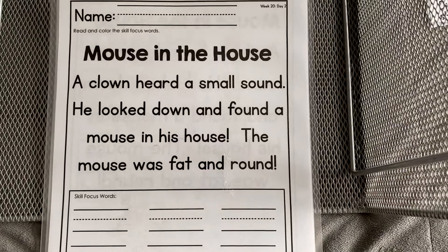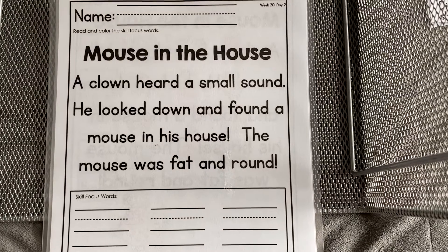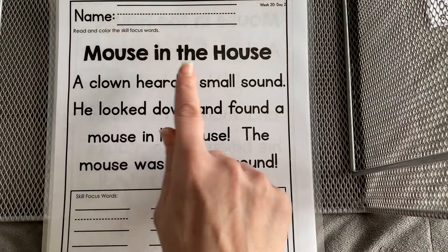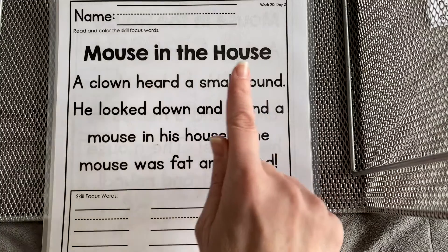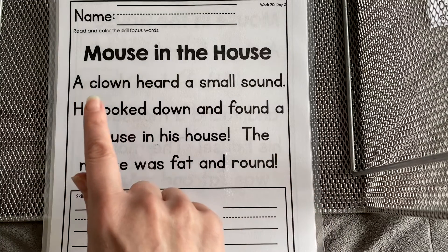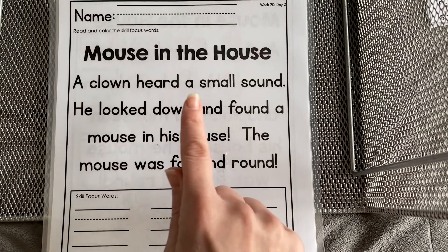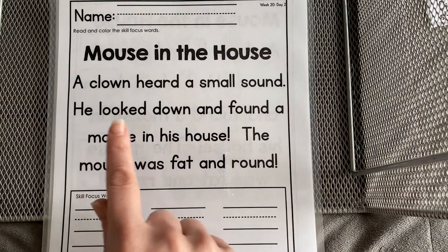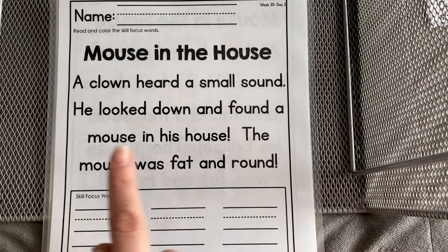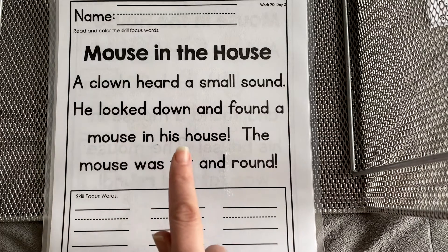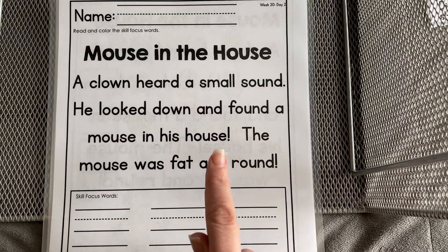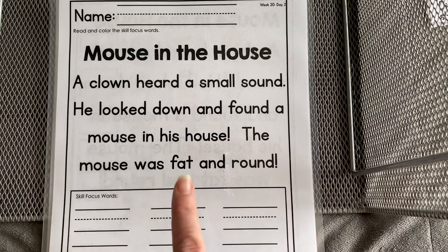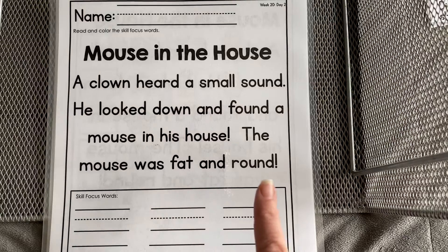Let's go ahead and read it again, starting with the title. 'Mouse in the House.' A clown heard a small sound. He looked down and found a mouse in his house. The mouse was fat and round.